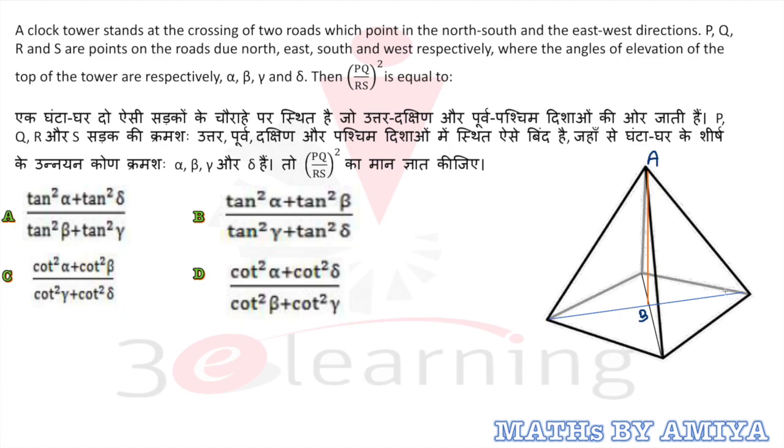So we have two roads. One is the blue road, one is the black road. This one is a road and the AB is a clock tower. North-south-east-west.